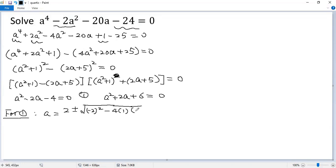That's 2 squared minus 4 times 1 times negative 4, all over 2a. So we get 2 plus or minus square root of 4 plus 16, which is 20, over 2. So we get 2 plus or minus 2 square root of 5 over 2, which simplifies to 1 plus or minus square root of 5.